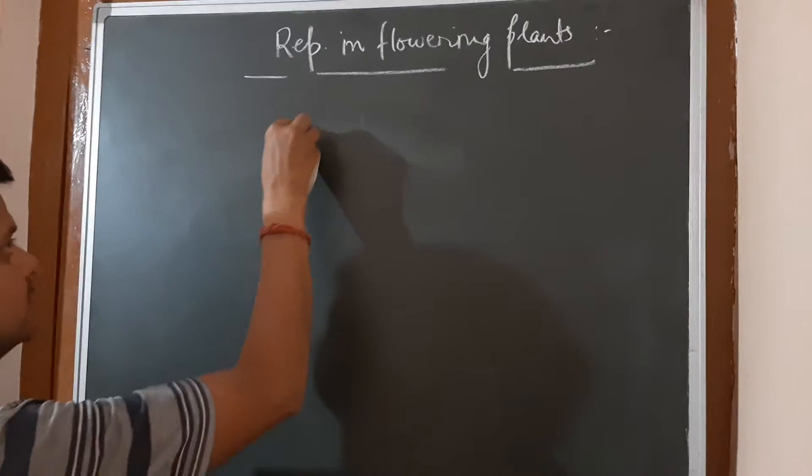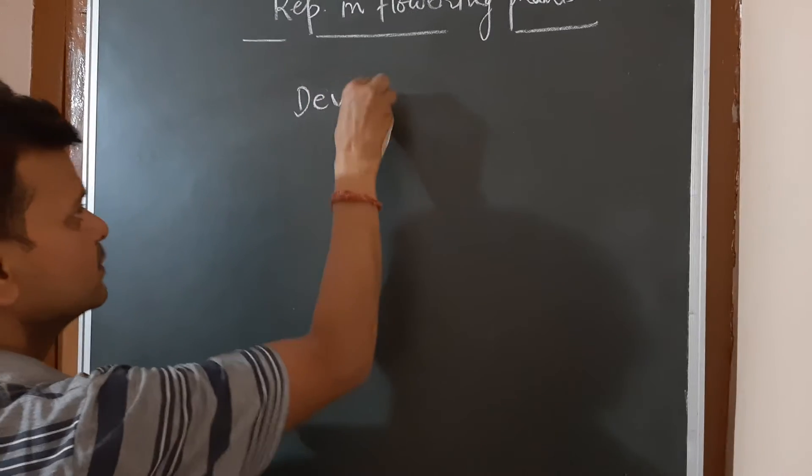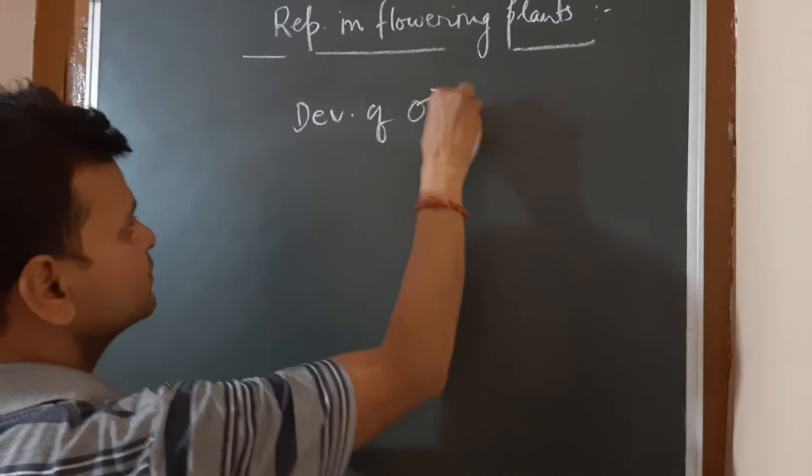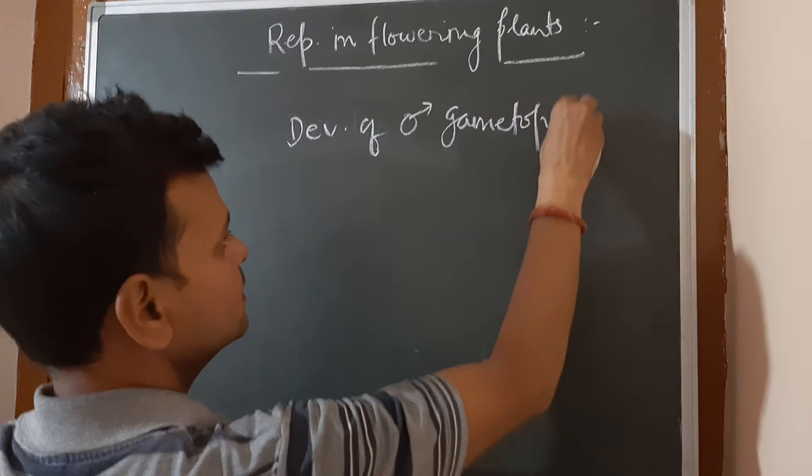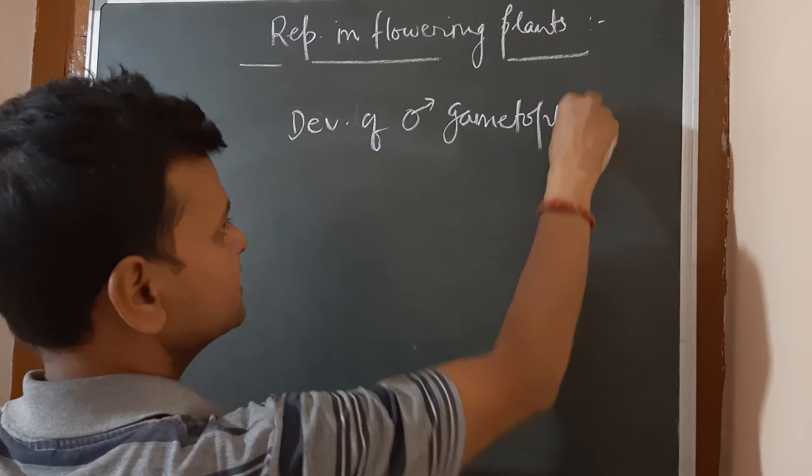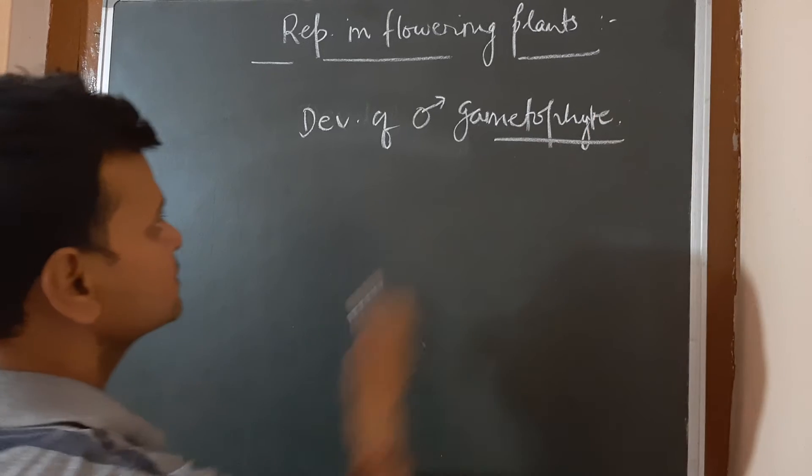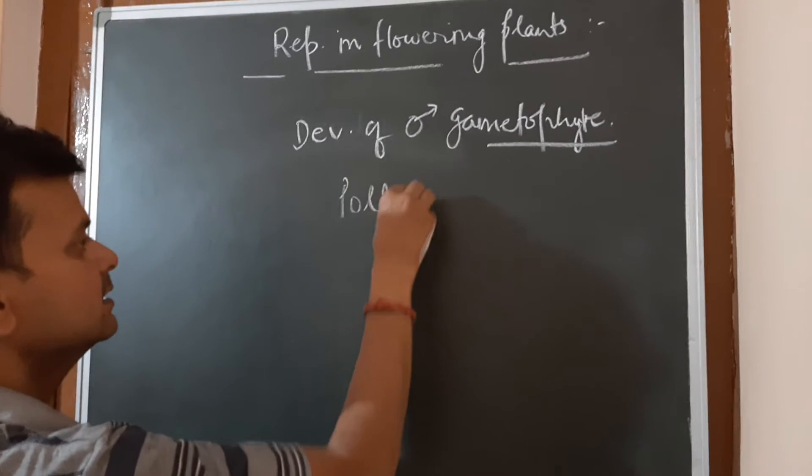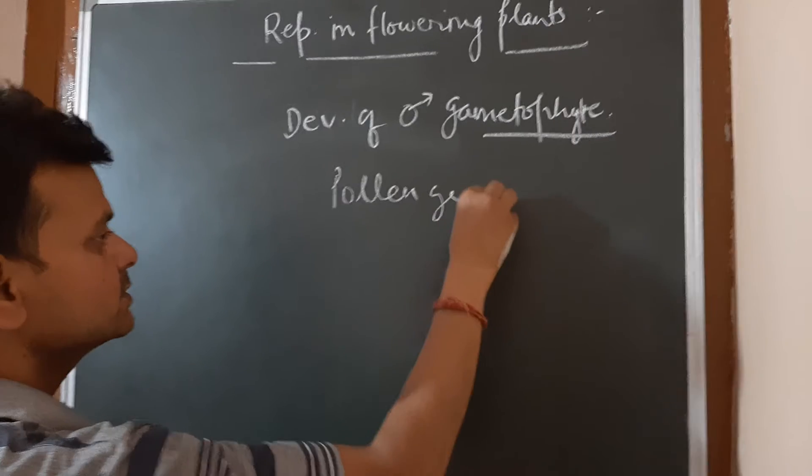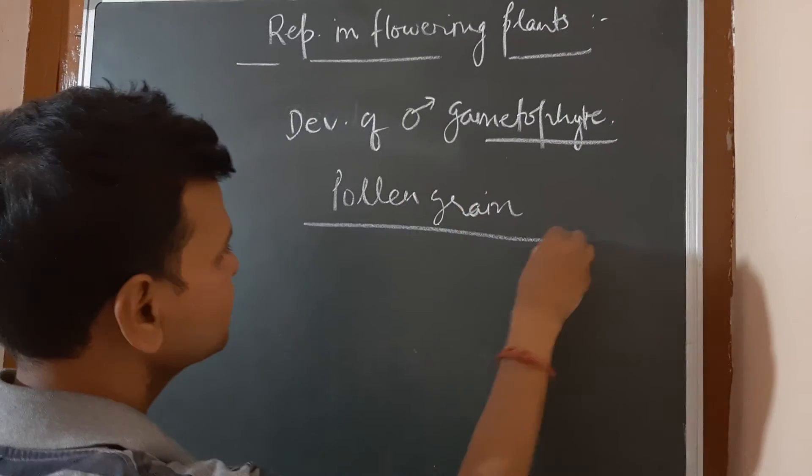Hello students, today we will be studying about the development of male gametophyte. The male gametophyte in the case of flowering plants is the pollen grain. So today we are going to study how pollen grains are developed or formed.